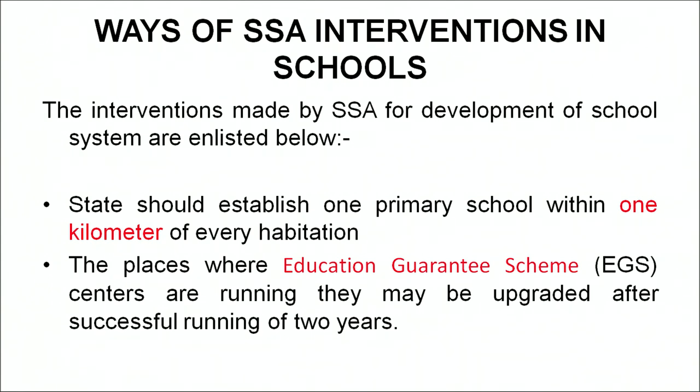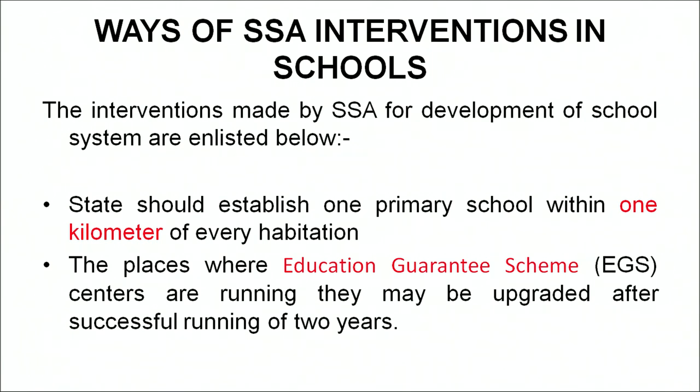SSA directs that state governments should establish one primary school within 1 kilometer of every habitation, so that children can easily walk to school and access education freely without difficulty. Second, places where Education Guarantee Scheme centers are running may be upgraded after successful running of two years. These centers were recommended to be upgraded after successful running for two years.